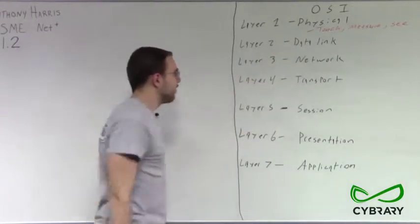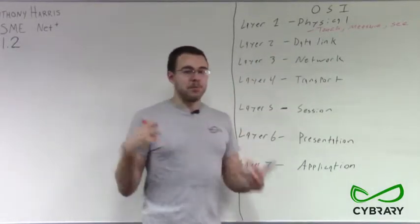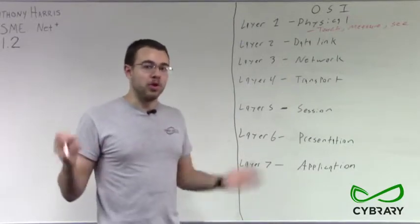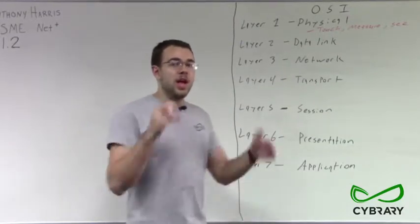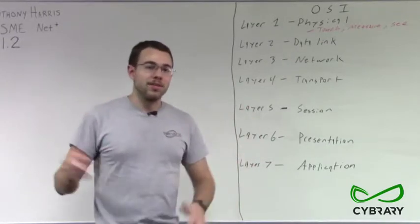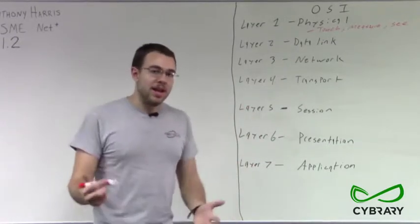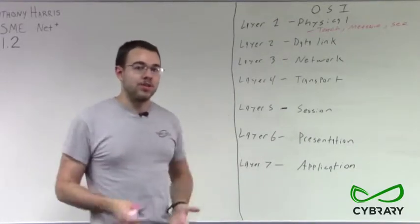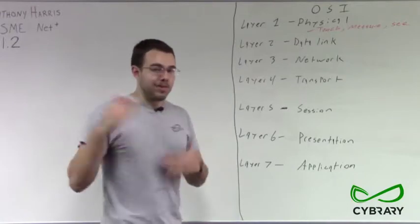Now our layer two devices are going to be things that provide point to point connectivity. And really that's all that they're doing is providing connectivity from one point to another point or one point to multiple points. But they don't route any data, they don't move data across any different networks. All they're doing is within our same network, they're providing point to point connectivity.